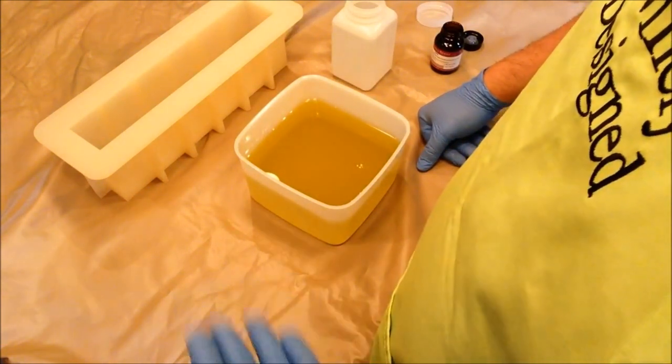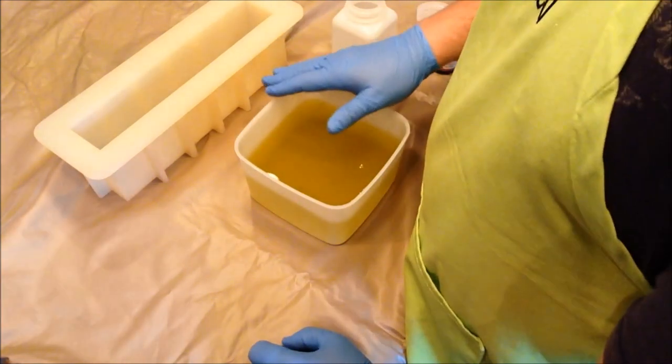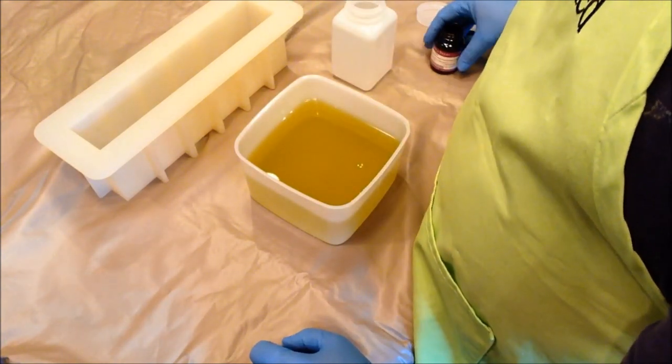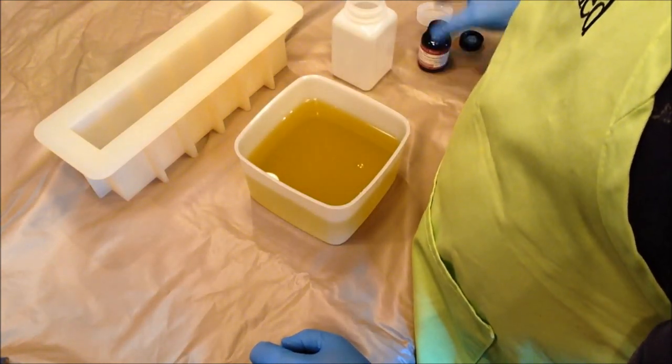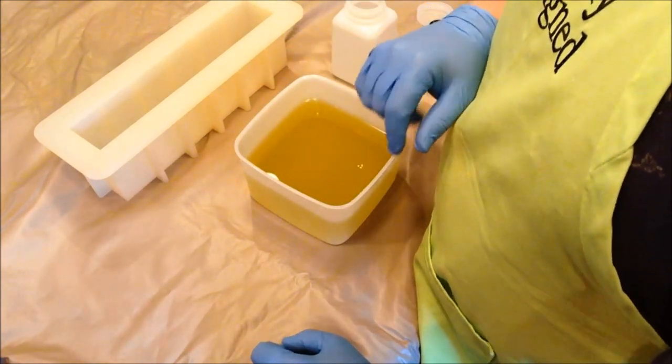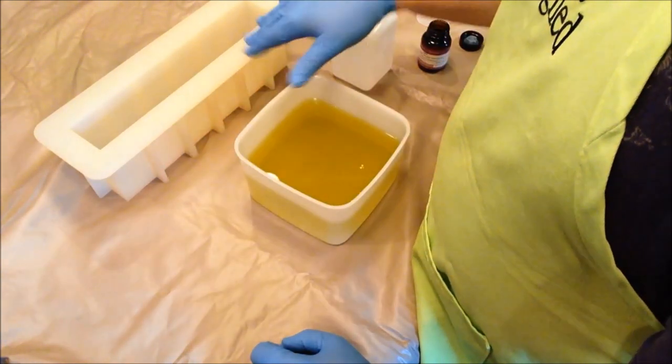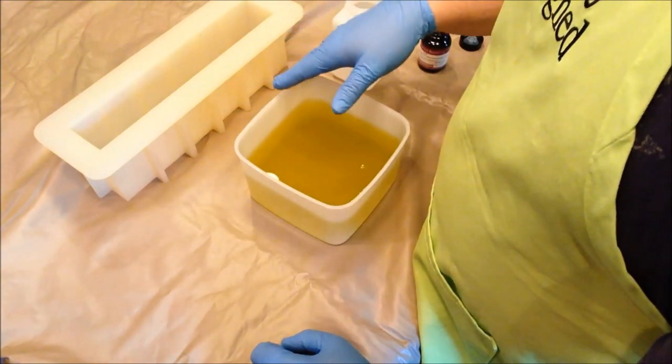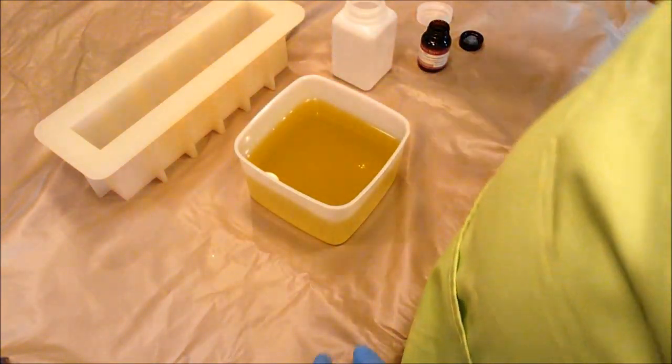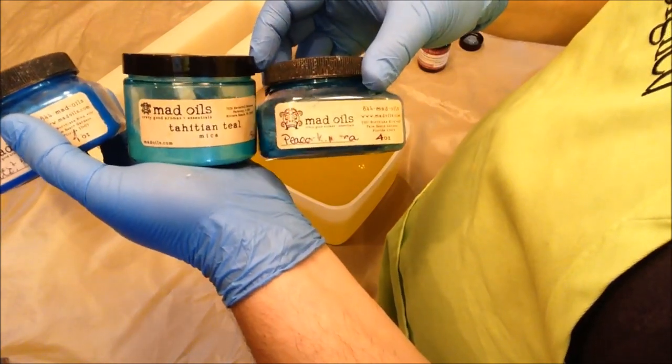I'd like to try and do a soap that sort of looks like a turquoise stone. Now, the fragrance collection does include a turquoise fragrance oil, but it discolors. So I'm going to be using the jade fragrance oil for this project. I have three different blues I'm going to be using, all from Mad Oils. Key West Blue, Tahitian Teal, and Peacock.